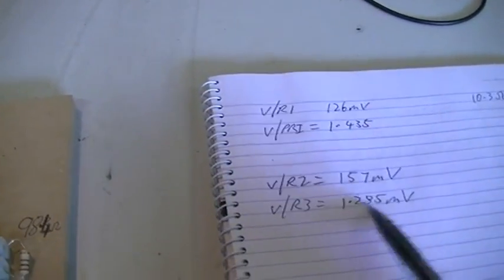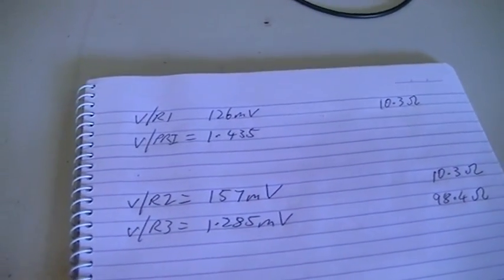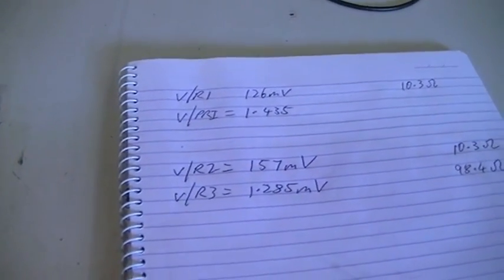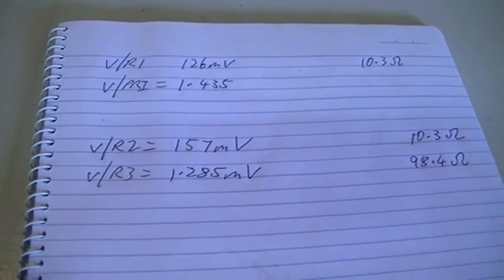So once again, simple Ohm's law is going to tell us what power is being dissipated across each resistor. So we will race off back to our online calculator and crunch those numbers, and we will come back and have a look at them.